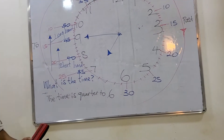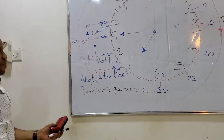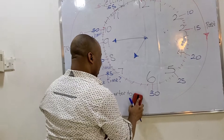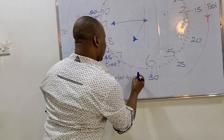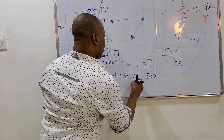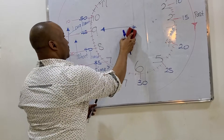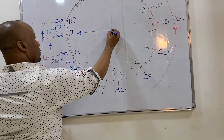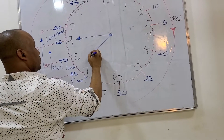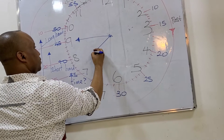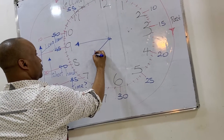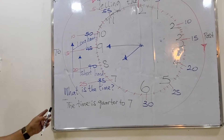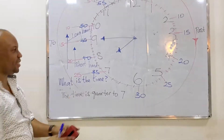What is the time? The time is quarter to seven. What is the time? The time is quarter to eight.